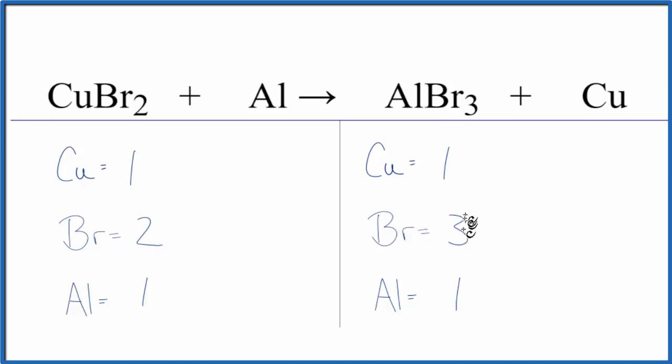When you have this odd number here, we have a three, it's helpful to get that to an even number, and you can do that by multiplying by a coefficient of two. So one times two, that'll give us two aluminum atoms, but the three times the two, that'll give us six of these bromine atoms.